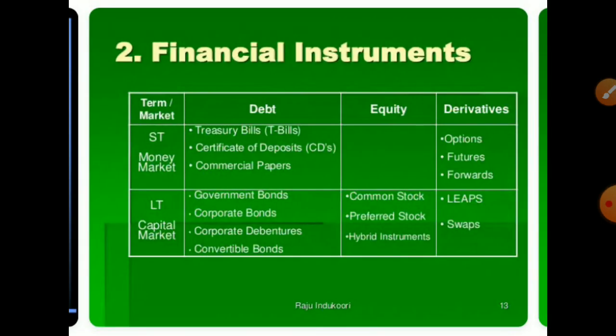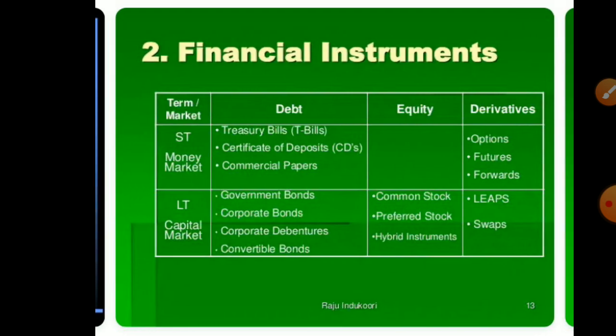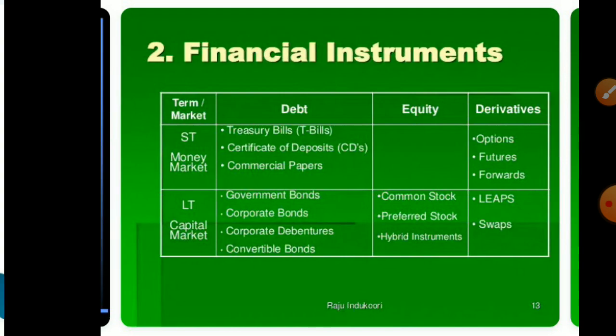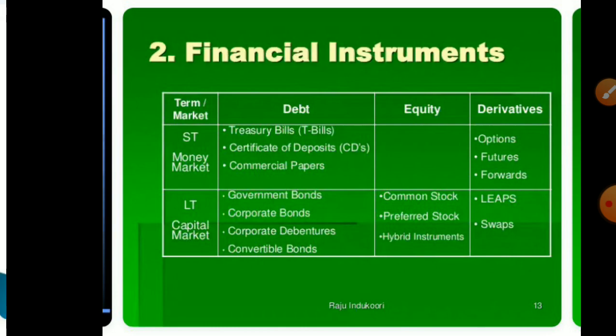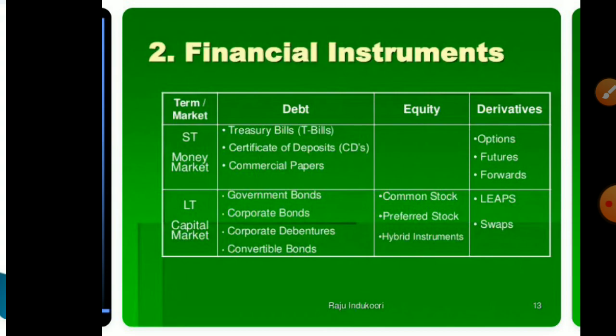For financial instruments, we have the money market and the capital market. Money market instruments include treasury bills, certificates of deposit, commercial paper, and government and corporate bonds, including convertible bonds. Capital market instruments include common stock, preferred stock, and hybrid instruments. There are also derivatives such as options, futures, forwards, swaps, and some other related instruments.